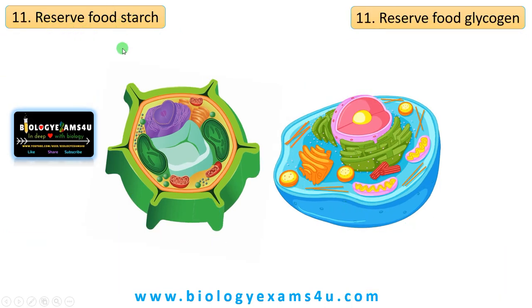Difference number 11: the reserved food in plant cells is starch, whereas in animal cells it is glycogen.